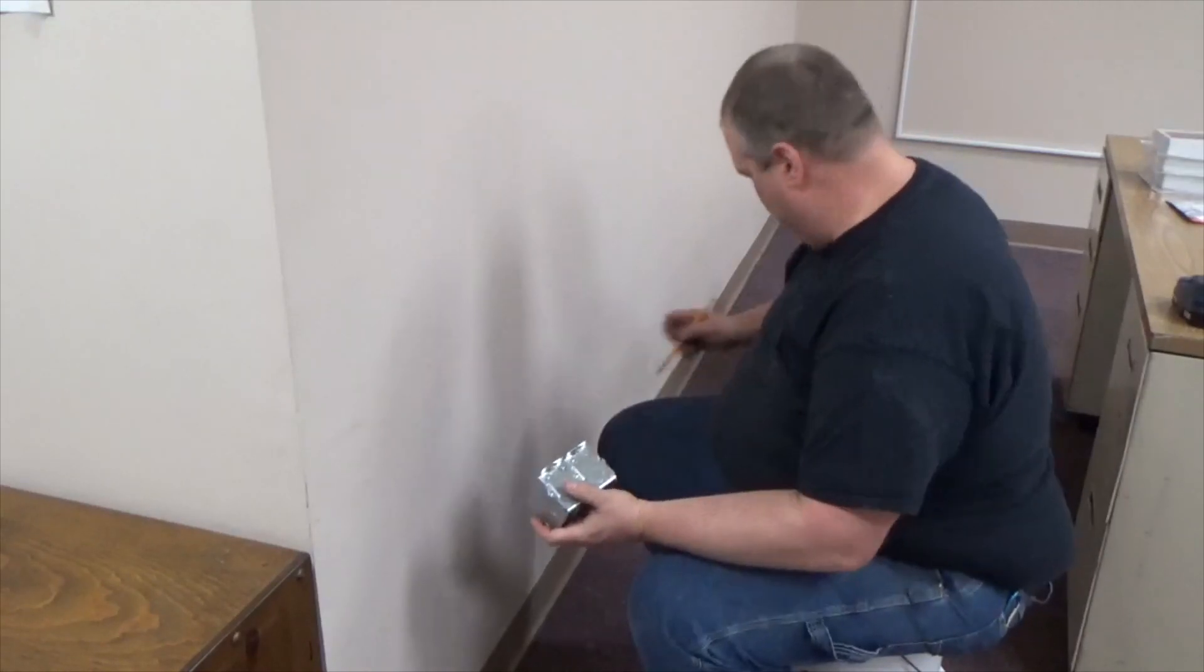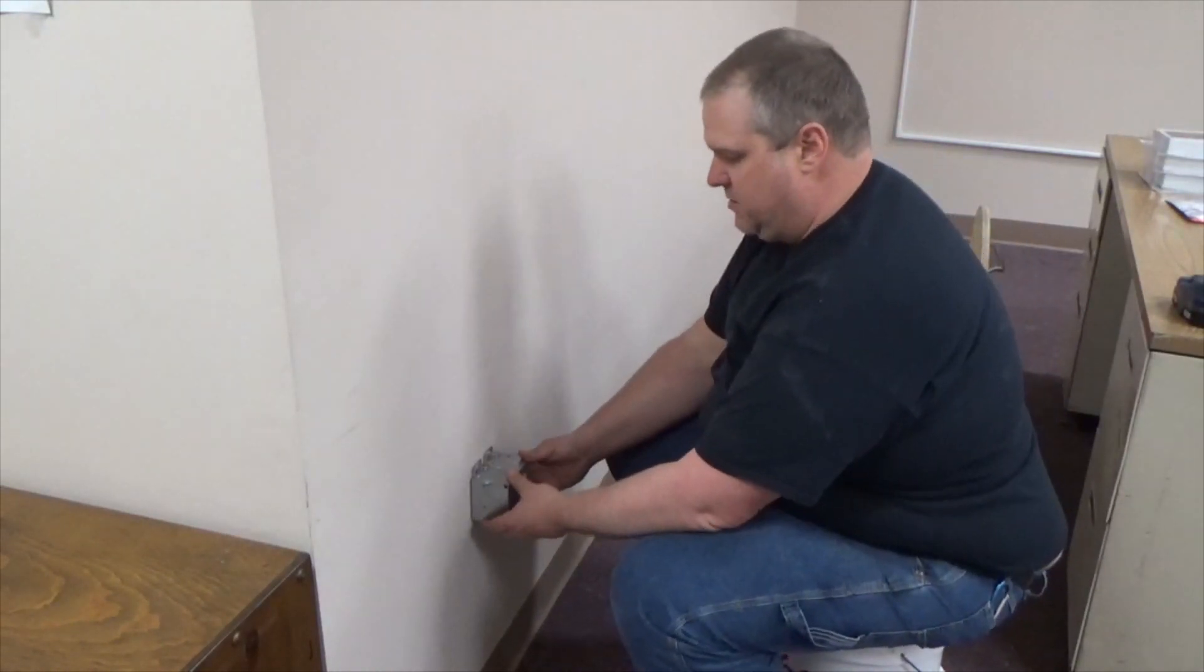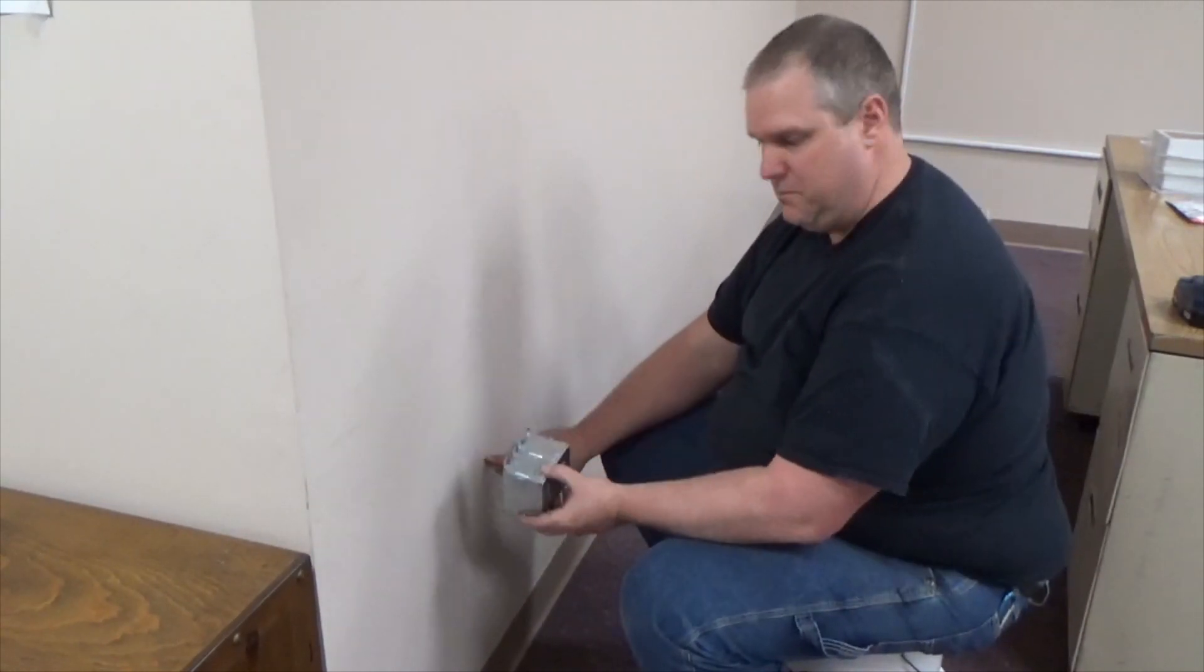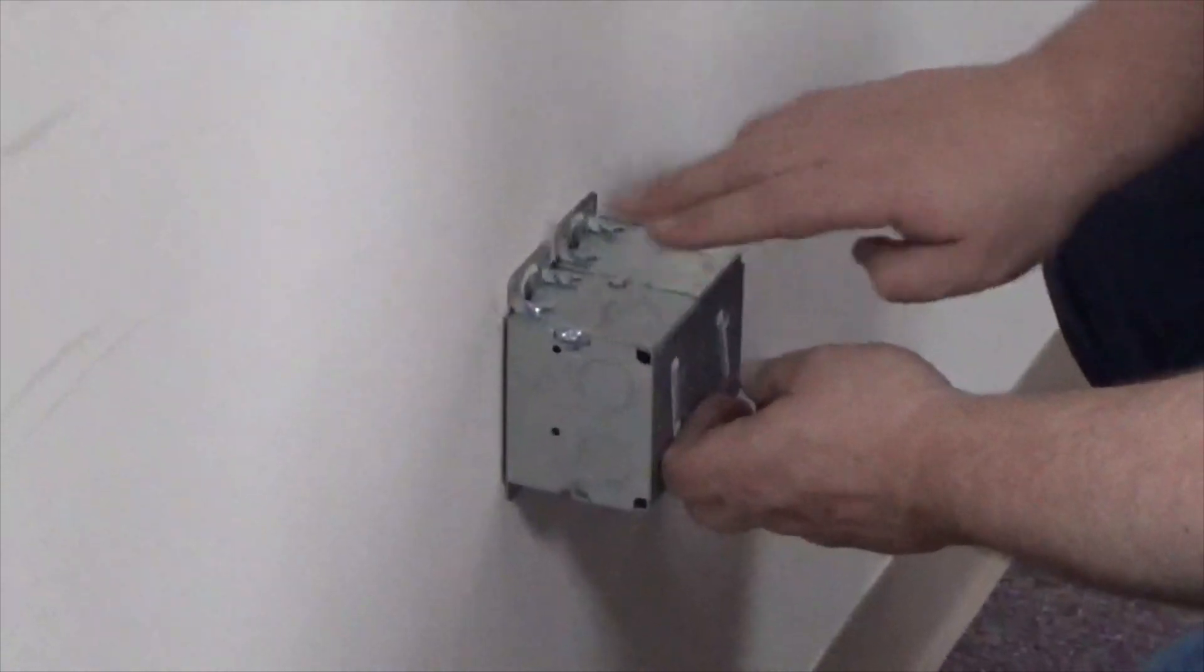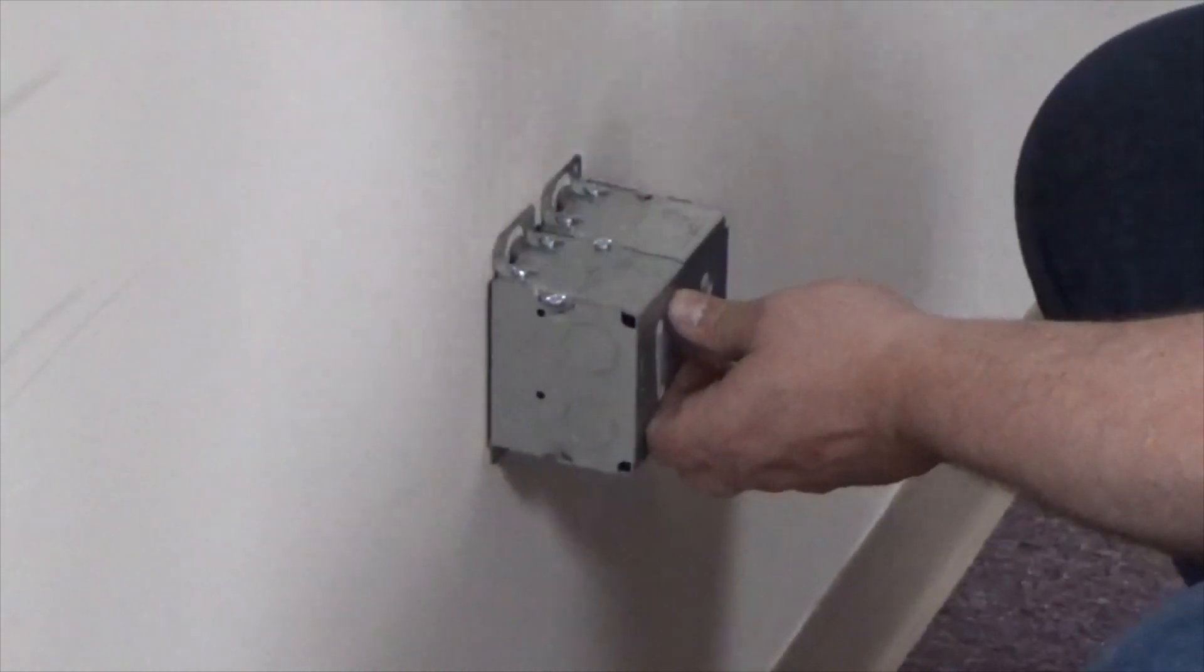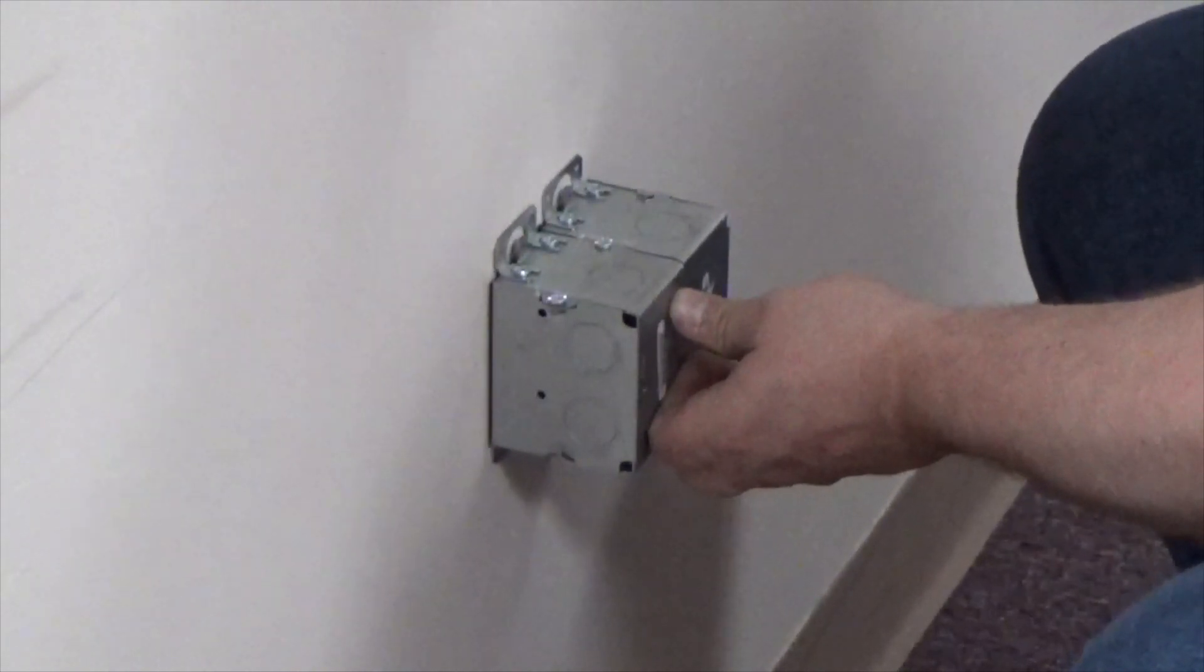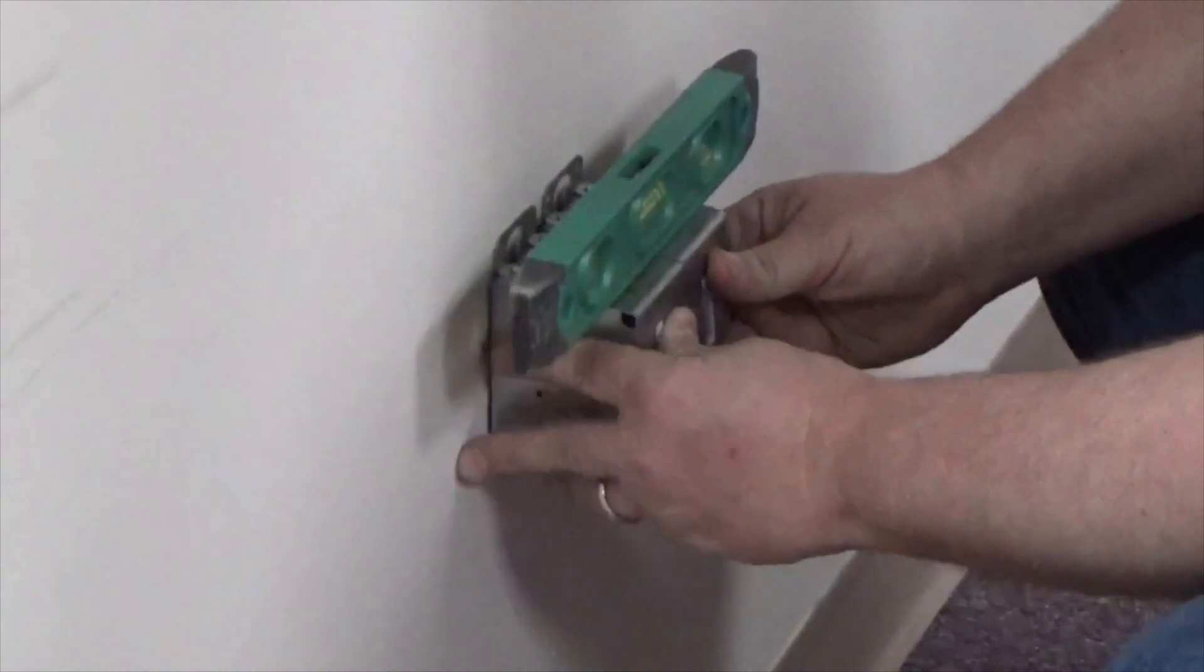So again, I've got my jab saw. My jab saw is what I'm going to need in order to cut the sheetrock, in order to put the box in the wall. So let's get started. So now what we're going to do is we're going to take this and we're going to put it up against the wall. So I want the top of this box to be at 20 inches above finished floor. I'm going to take my level and I'm going to put my level on the box and I'm going to level it up.